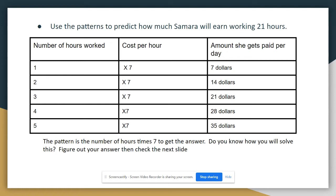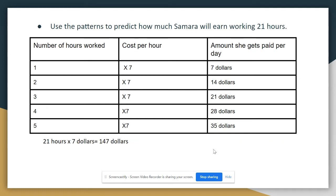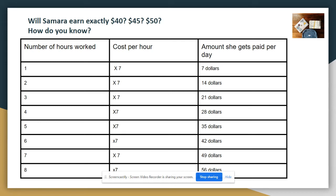And there's a few ways you can go about doing this, whether it's just doing straight multiplication or continuing on the chart. Where's your answer, right? Will Samara ever earn exactly $40 or $45 or $50? Look at the chart. And that pretty much gives you your answers. So you're going to notice there is no time where she has an even amount like $40, $45 or $50.